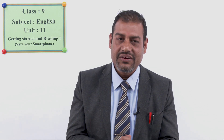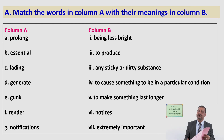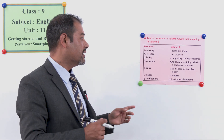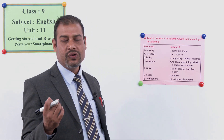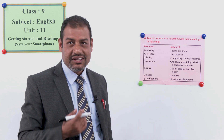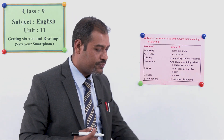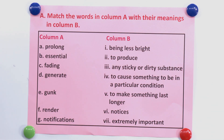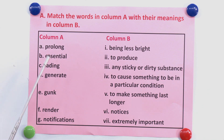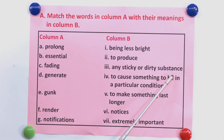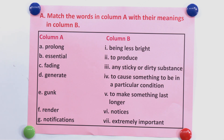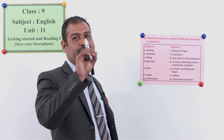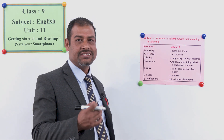Now we have a task: match the words in Column A with their meanings in Column B. You have written the word meanings in your notebook and got the meanings from the paragraphs. The first word is 'prolong.' The options are: being less bright, to produce, any sticky or dirty substance, to cause something to be in a particular condition, to make something last longer, notices, or extremely important. I want to give you time to do this task — please match them all.